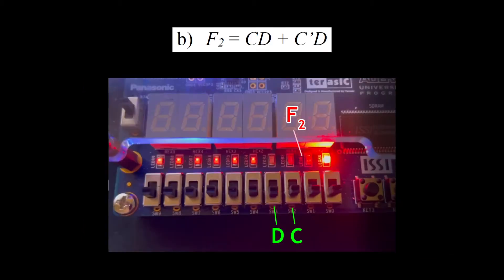For F2, switch 2 represents input C, switch 3 represents input D, and LED R1 represents output F2.